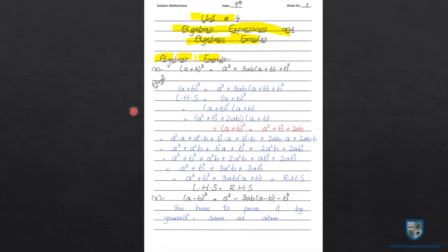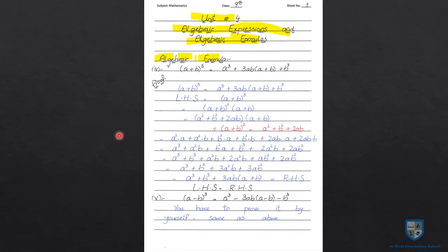In the next step, a plus b whole square is an algebraic identity. We apply it: a plus b whole square is equal to a square plus b square plus 2ab. So we write a square plus b square plus 2ab, into a plus b as it is. This uses the identity: since a plus b whole square equals a square plus b square plus 2ab.